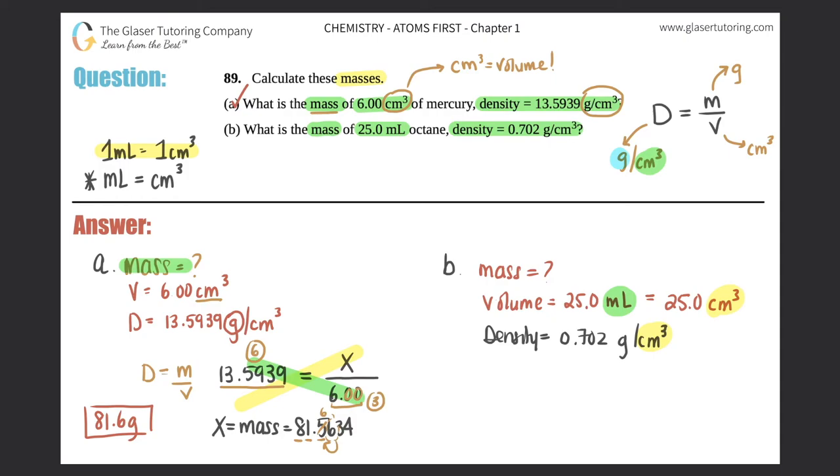Now we're going to plug it in. D equals m over v. 0.702 equals X over 25.0. This is another cross multiplication. So you would get X equals the mass, 0.702 times 25.